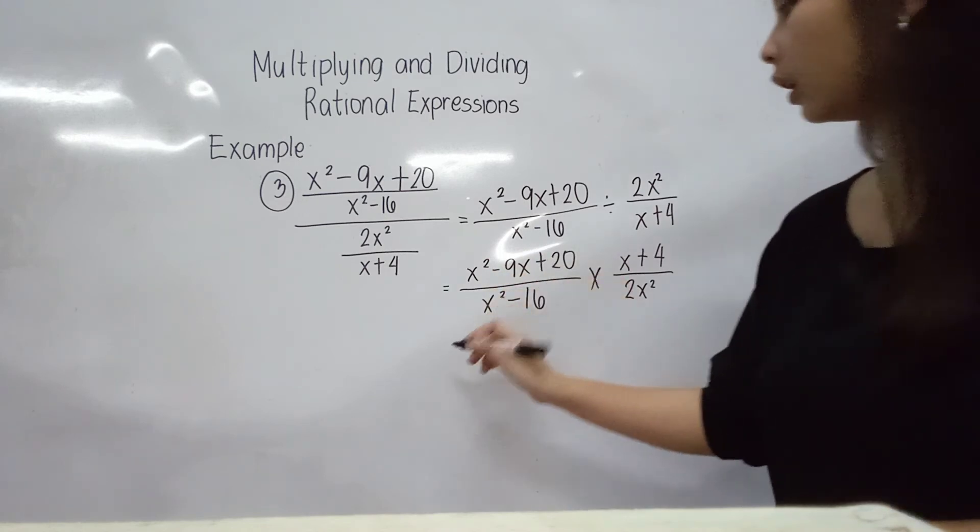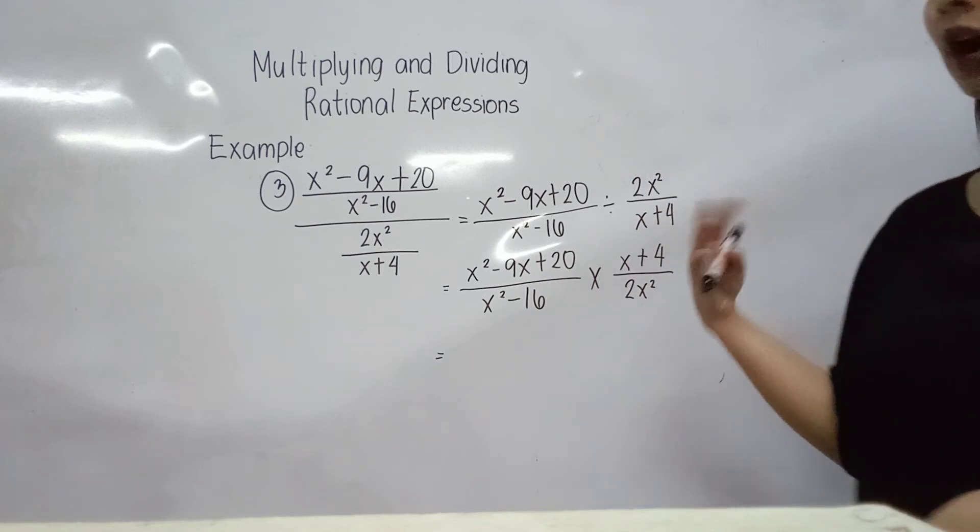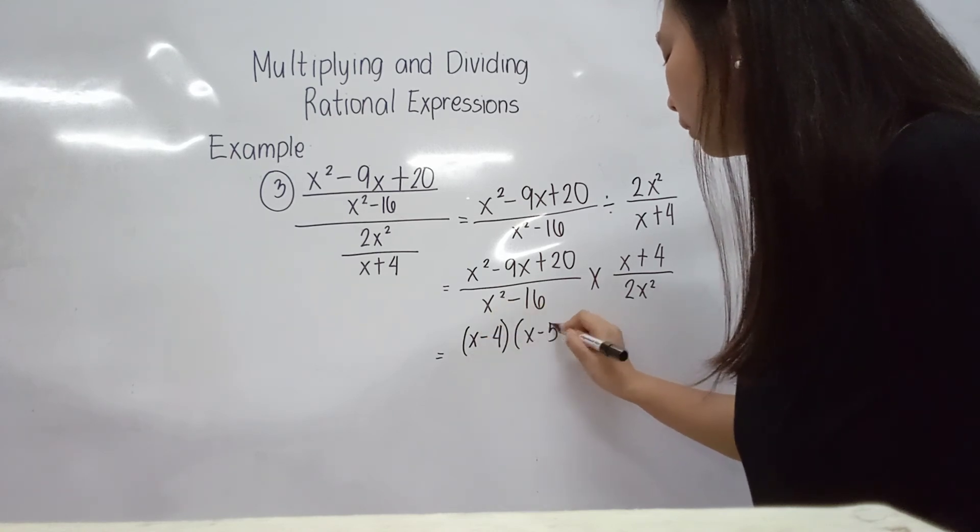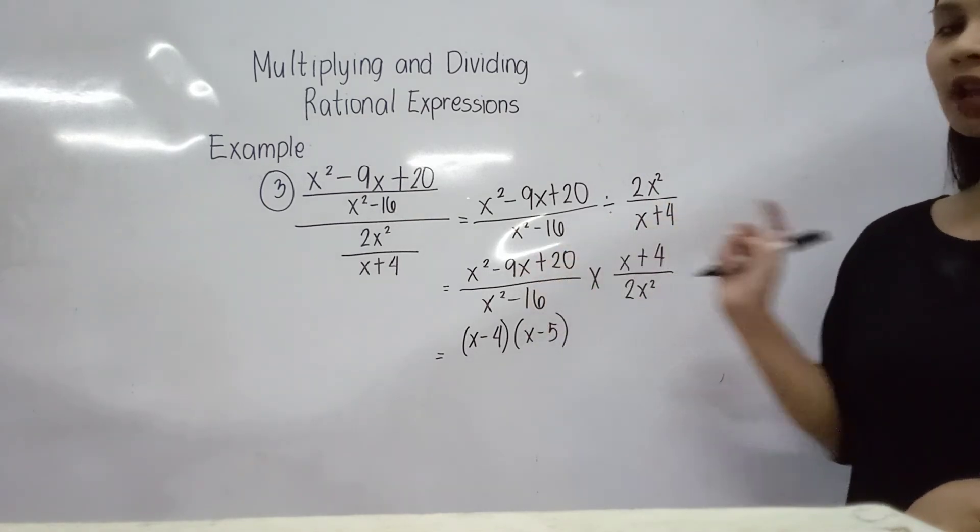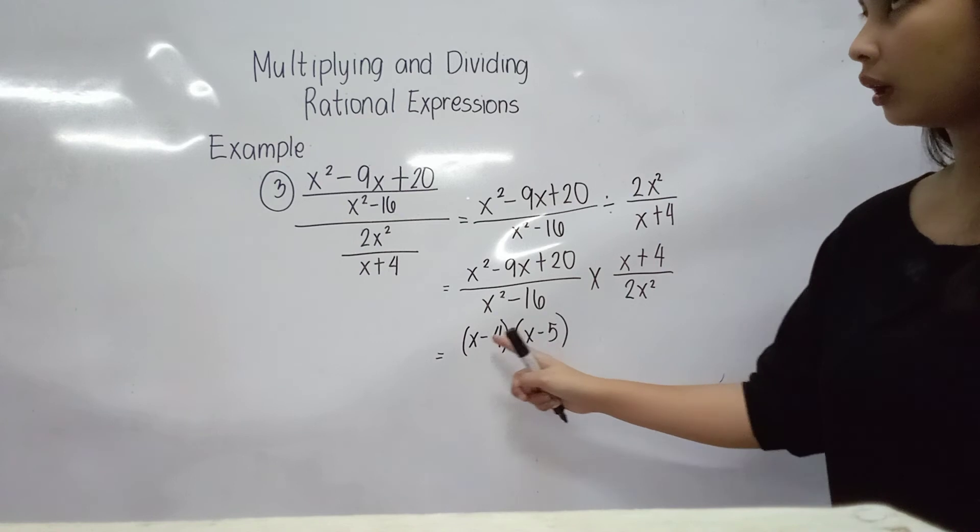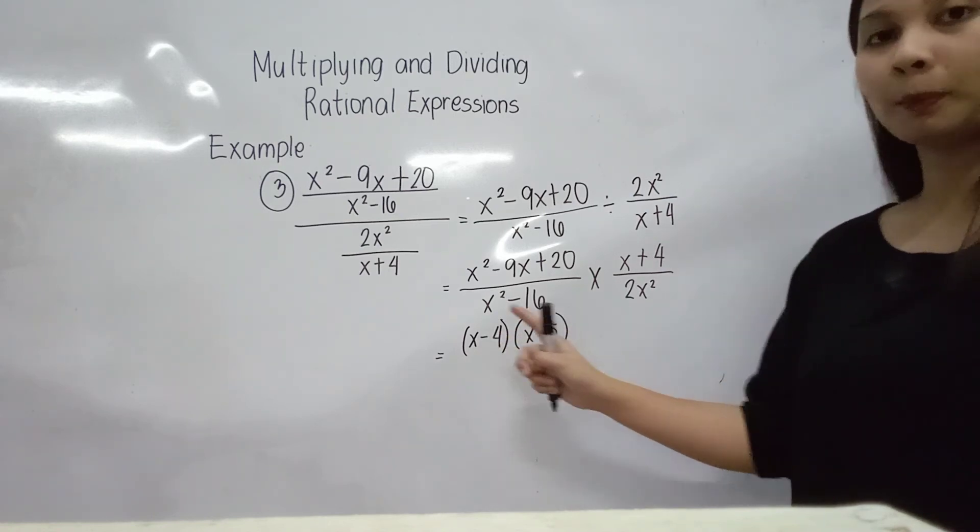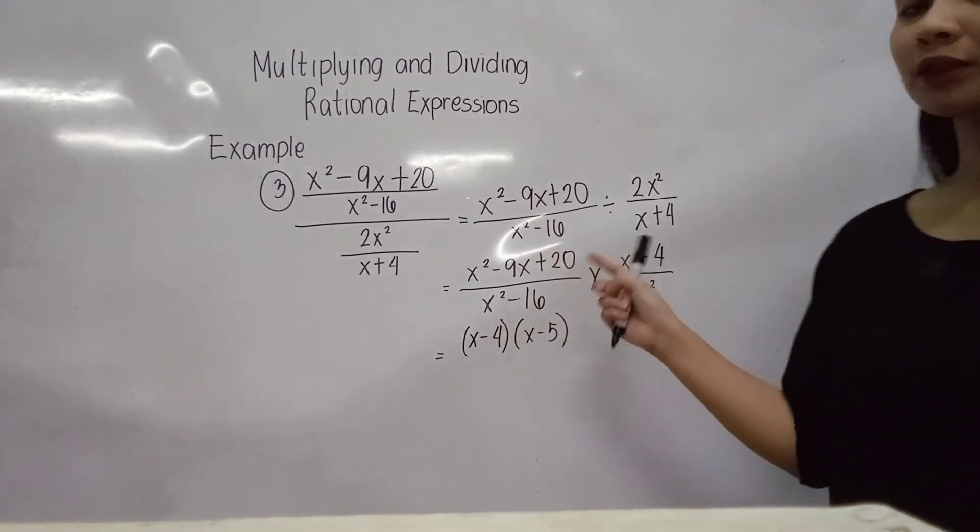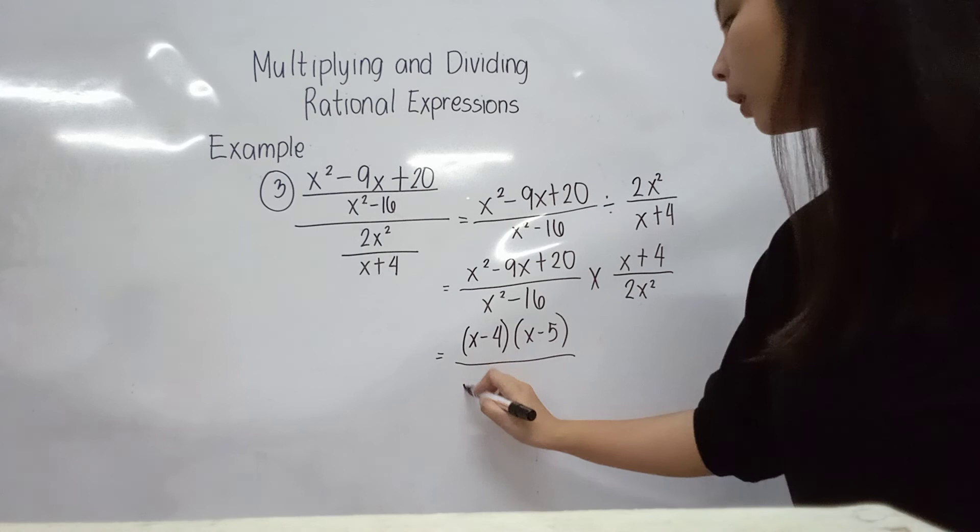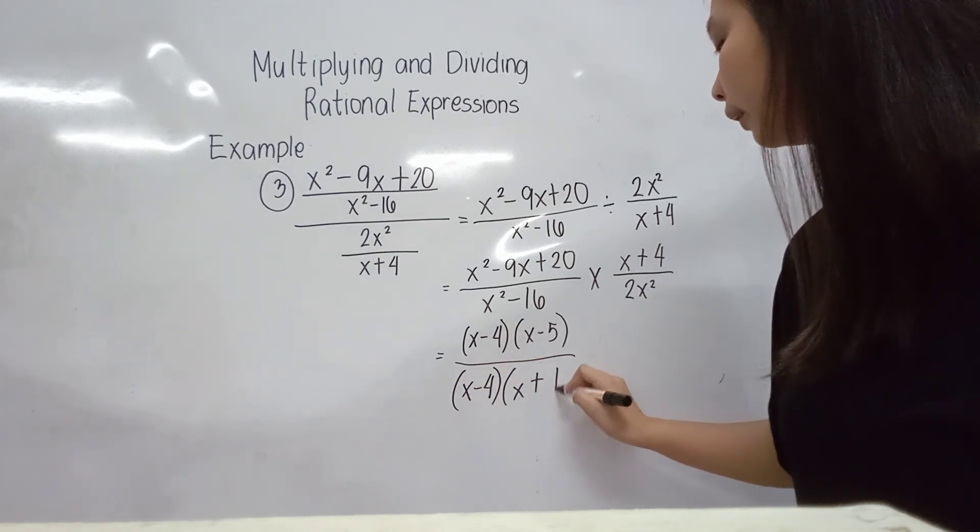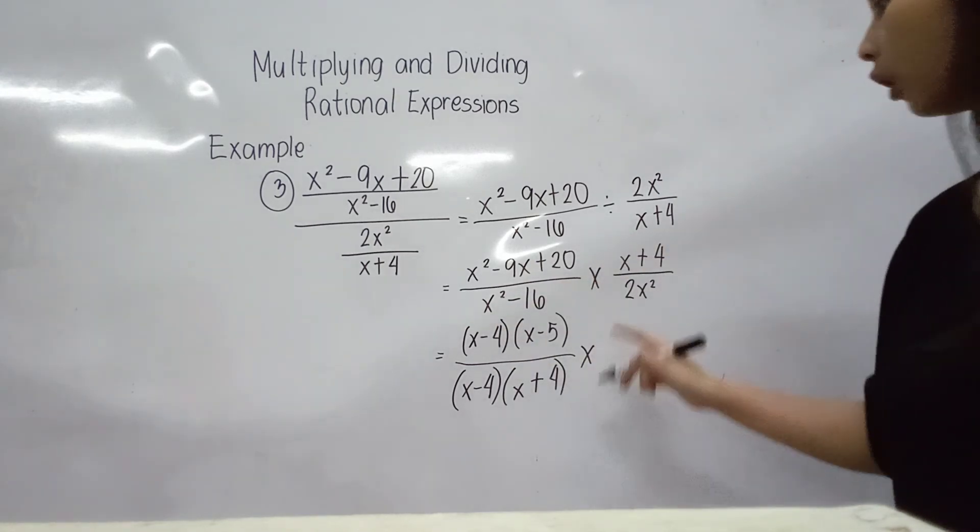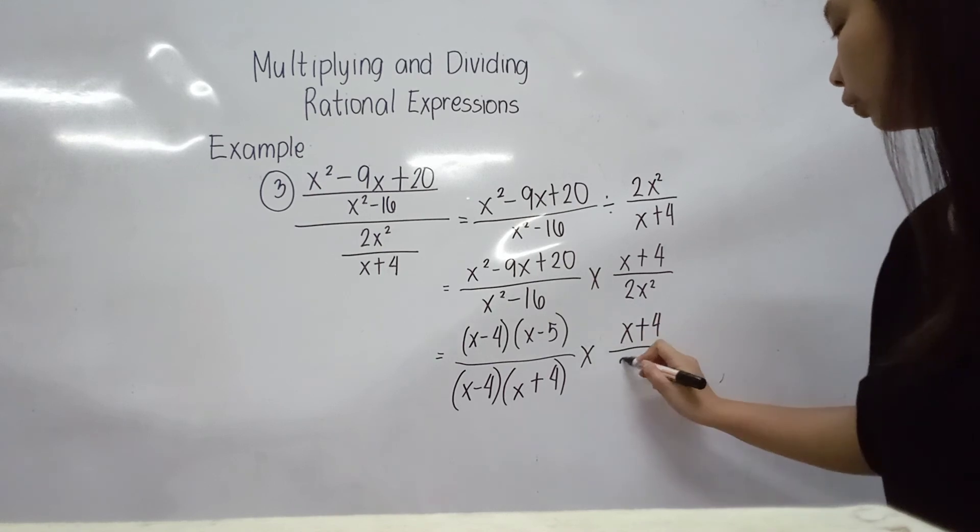So kopya lang yung first expression - x squared minus 9x plus 20 over x squared minus 16, and then times, since we are going to apply multiplicative inverse, multiplication ang ating operation. And then ito, yung ating second expression is magiging magkabalik pa sila - x plus 4 is numerator na, 2x squared is denominator. So multiplication na siya, mas madali na. Itong ating, magkagamit natin yun si factorization. So x squared minus 9x plus 20, factor natin. It will become x minus 4, x minus 5. So factors ni 20, nakapag-add natin, is 9 po yung answer. Since subtraction ang nauna nating operation, automatic yung ating operation sa factors is subtraction pareho. Next, x squared minus 16, ito naman is difference of 2 squares. So ito ay magiging x minus 4, x plus 4.